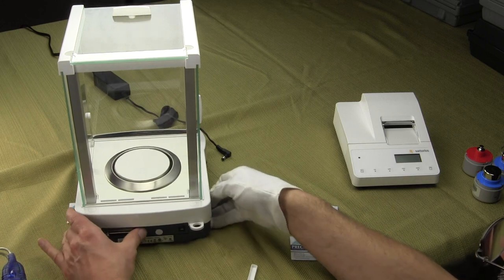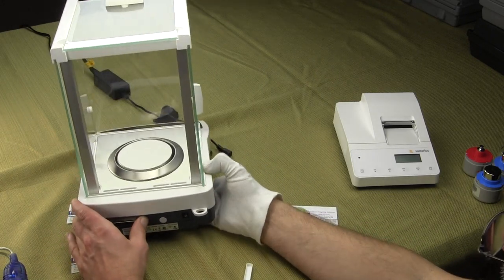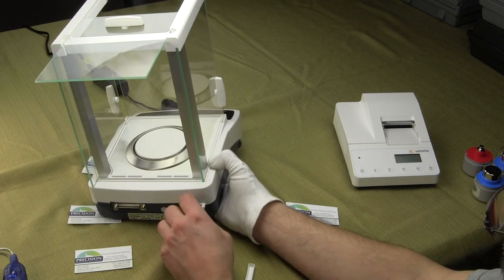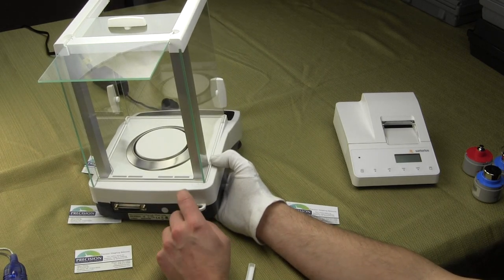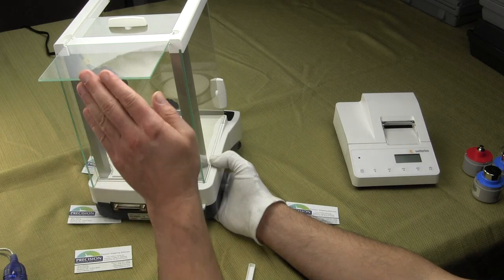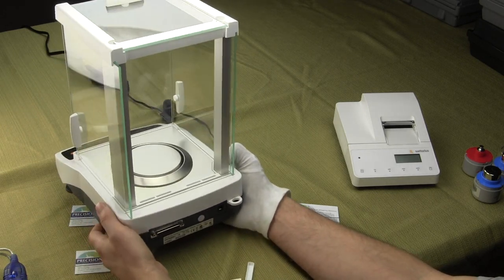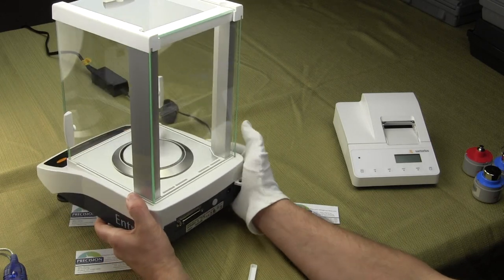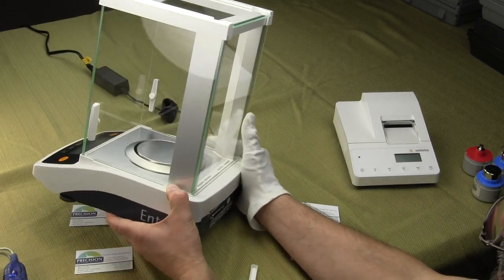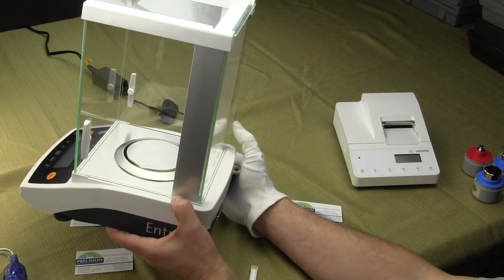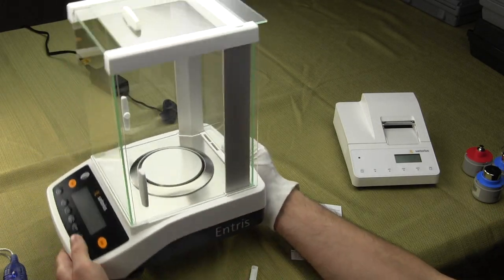On the rear of the balance, there's a security hub where you can put a cable through it if you want to lock it down. A lot of universities do lock down their balances. On the bottom of the balance, you have two adjustable feet in the front. I don't want to flip it over because I don't want the weigh pan on the inside to fall out.